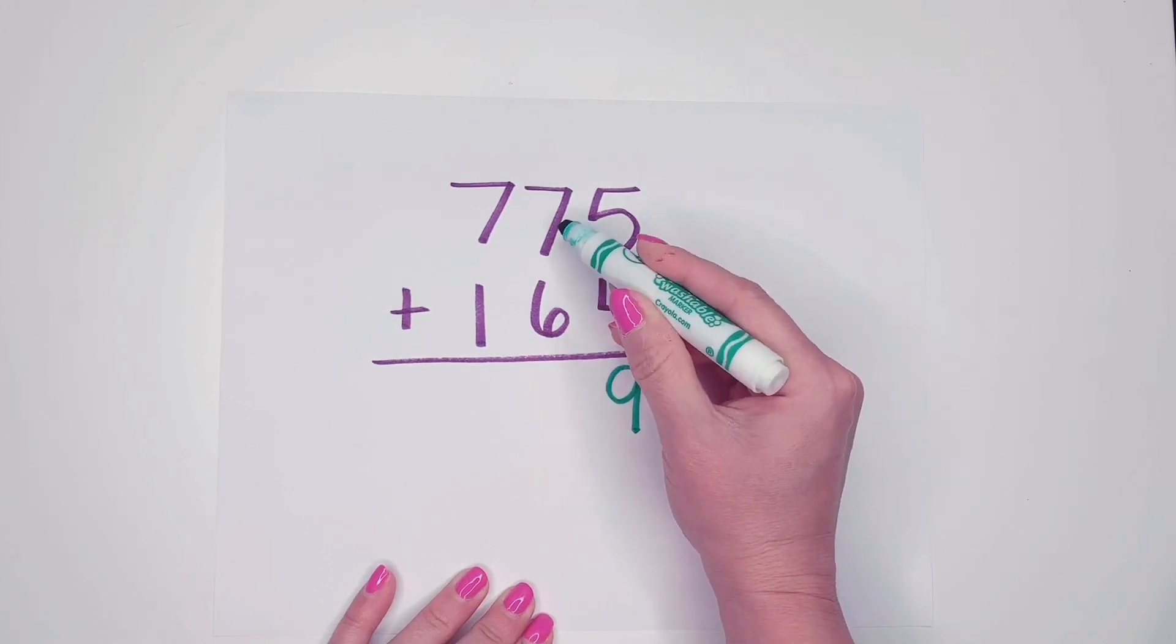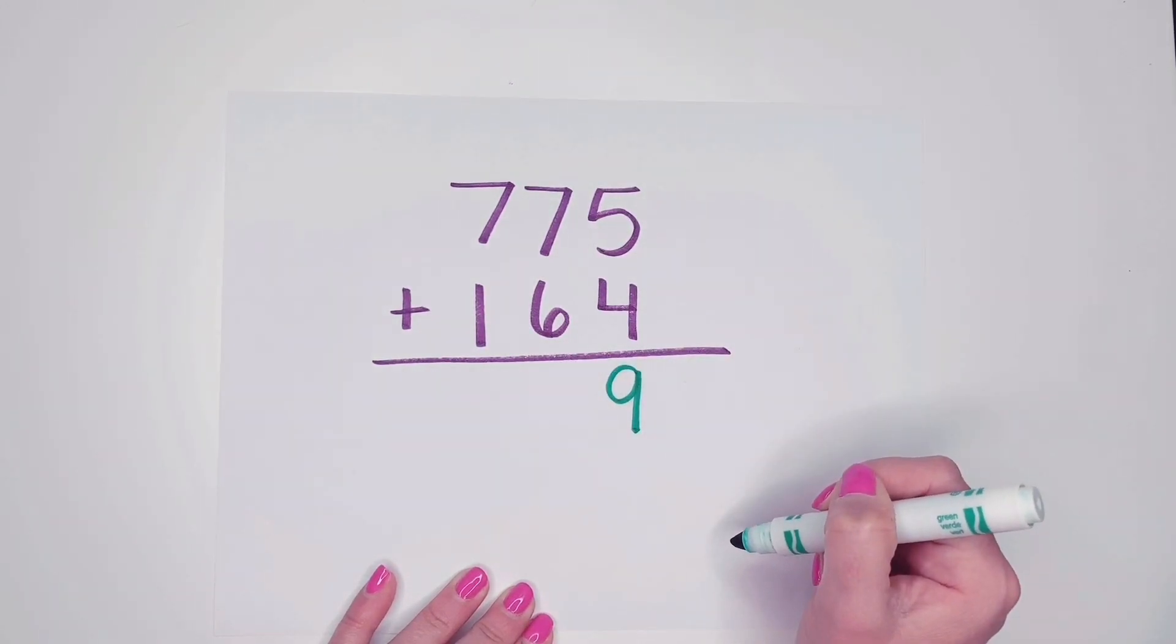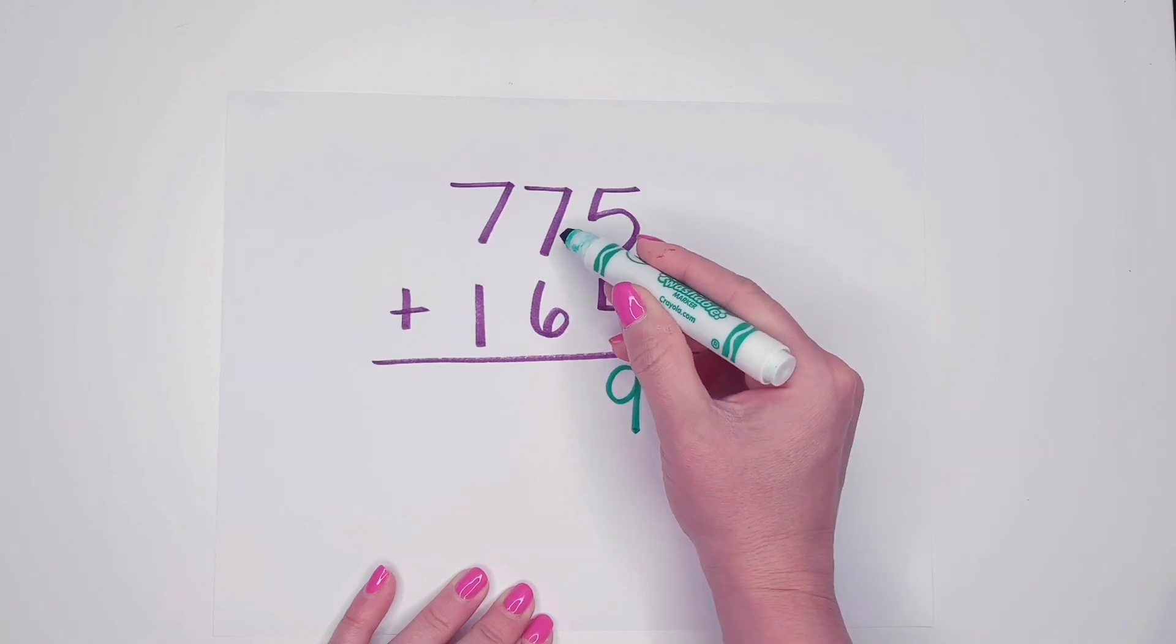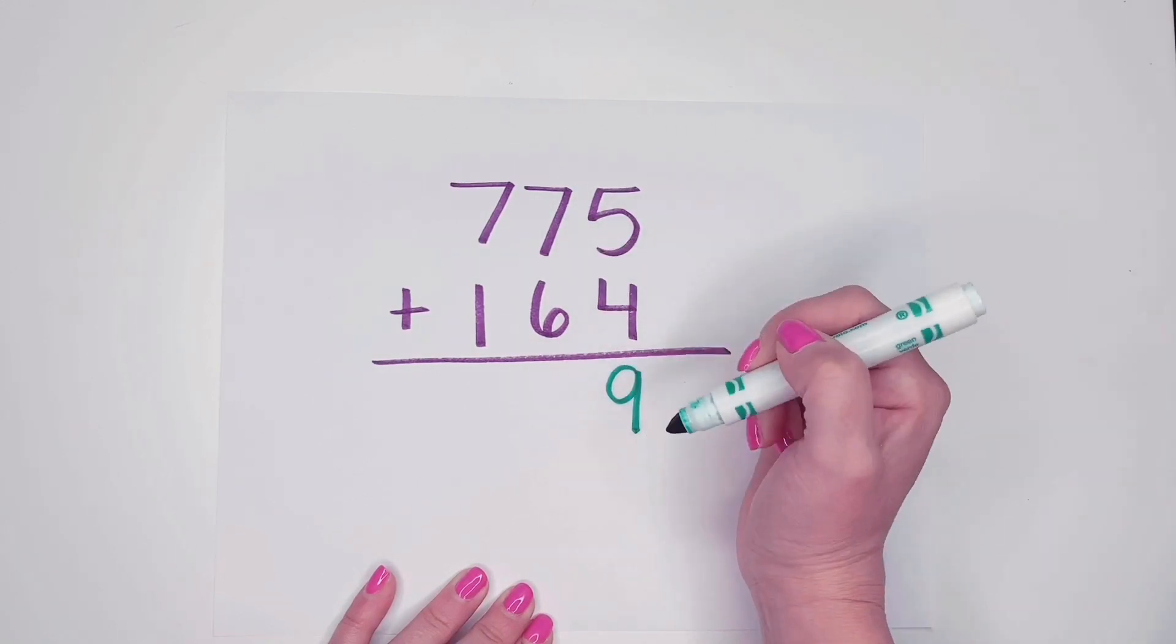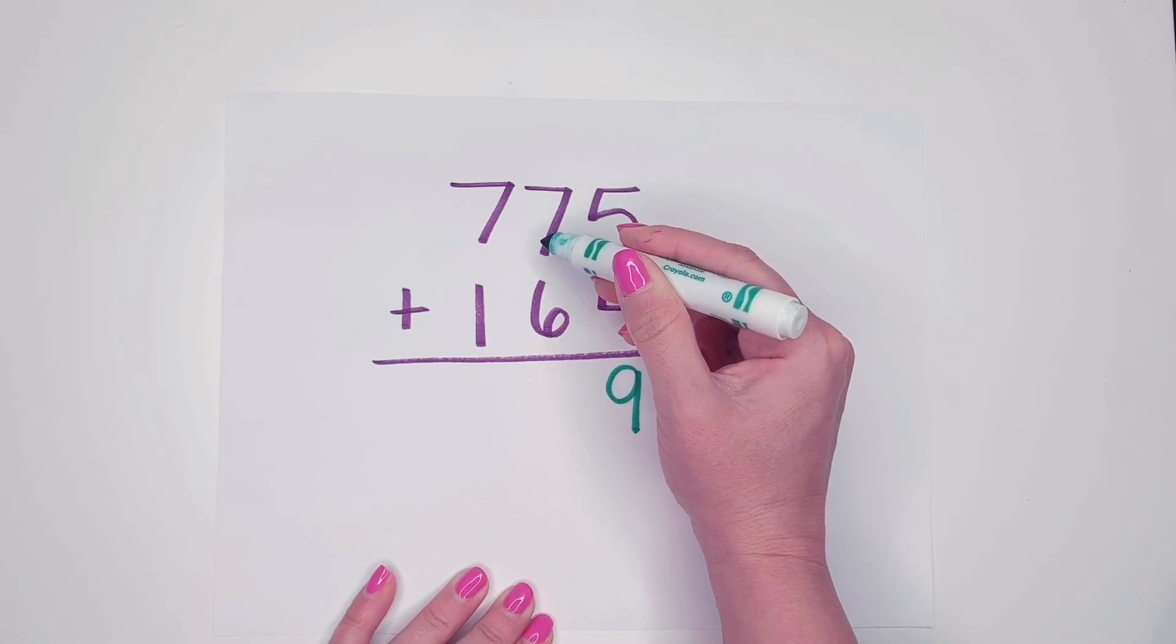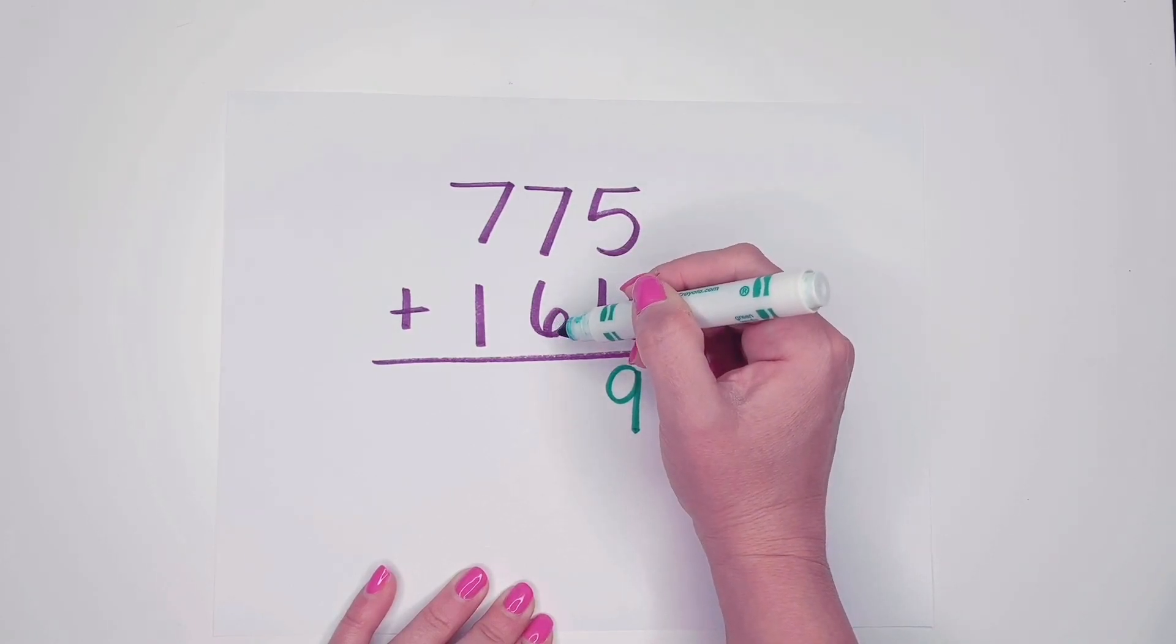Seven plus six. Oh, I can use double facts to help me with that too. So I could say six plus six is twelve. And that's one more. So it's thirteen. Or I can say seven plus seven is fourteen. So this is one less. So it's thirteen.